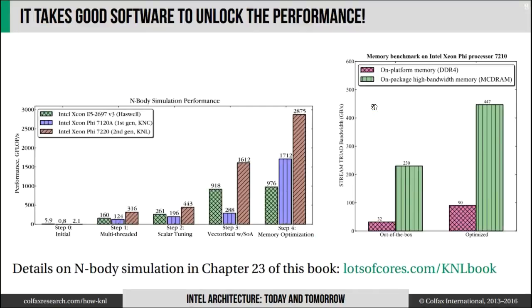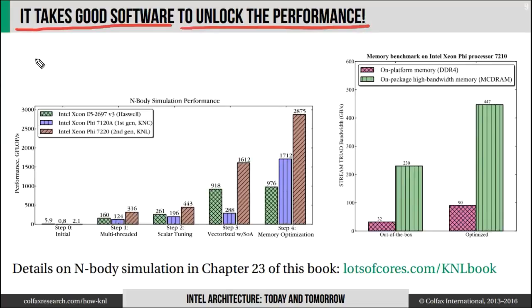Xeon Phi processors seem like an excellent platform — they run the same code that a standard CPU runs and deliver high performance. However, it is important to realize that this performance doesn't come for free. It takes good software to unlock the performance of a Knight's Landing processor, and for that matter, of any parallel processor. Here's an example illustrating how it works — this is a very common story in applications.